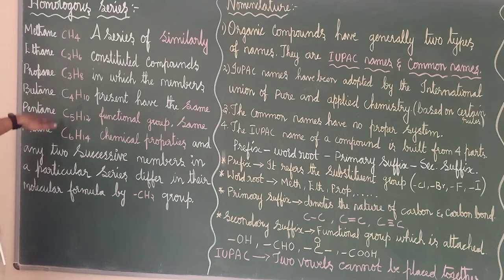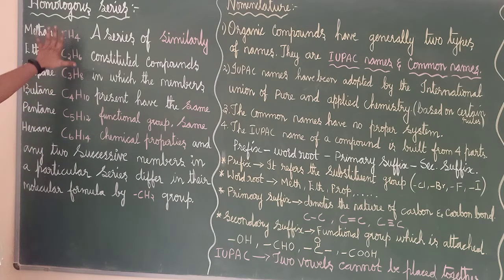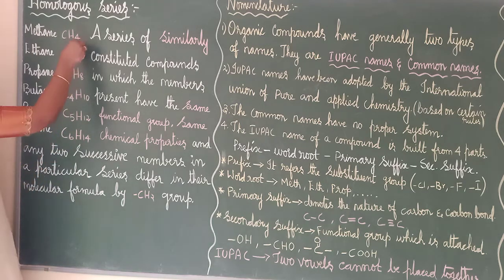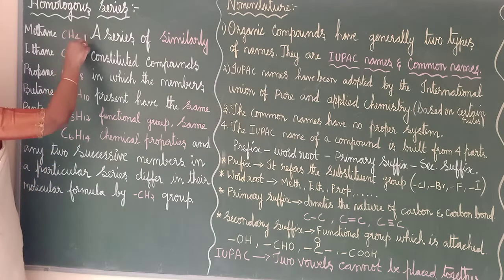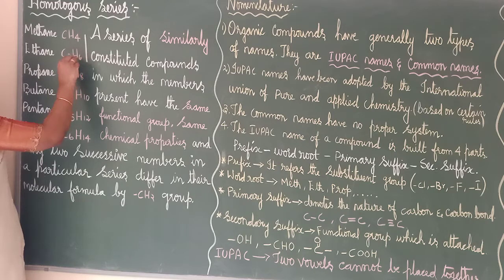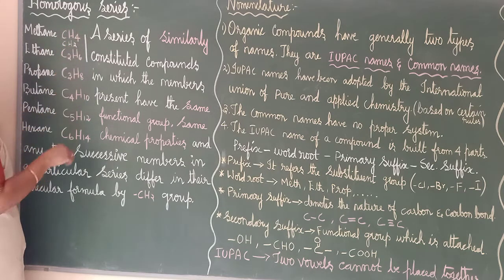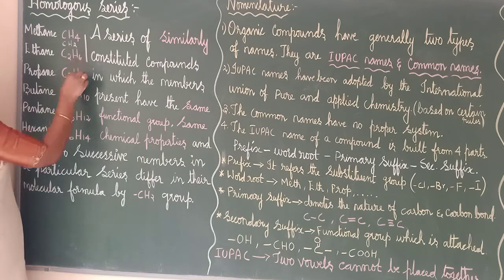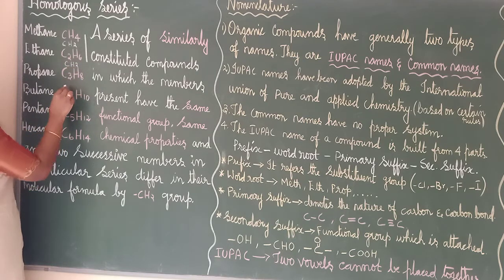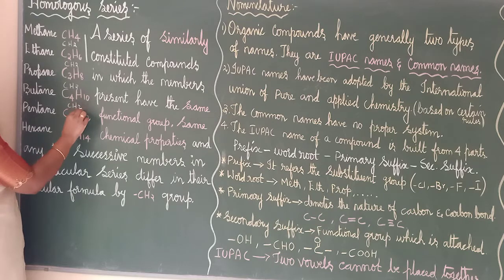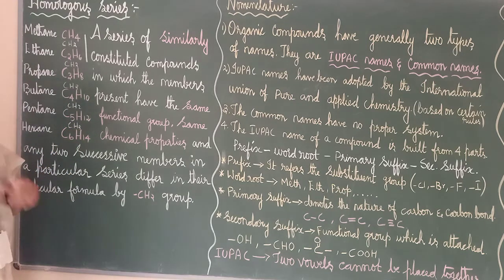By seeing this you will come to know. Can you tell me the difference between these two? C2H6 minus CH4 — one C and H2, so the difference is CH2. Between the next two? CH2. Between the next? CH2. Now you got it, I think.